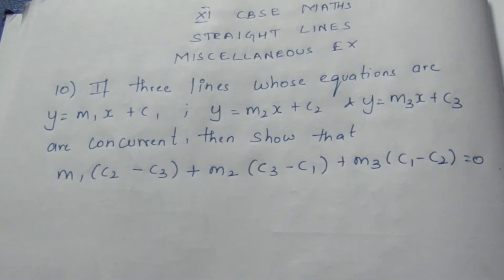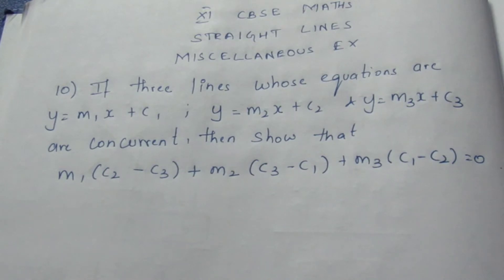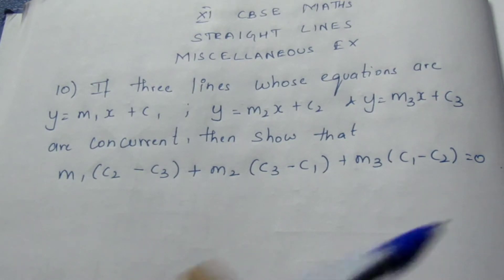If three lines whose equations are y = m₁x + c₁, y = m₂x + c₂, and y = m₃x + c₃ are concurrent, then show that m₁(c₂ - c₃) + m₂(c₃ - c₁) + m₃(c₁ - c₂) = 0.